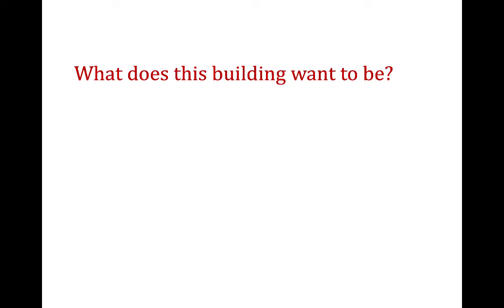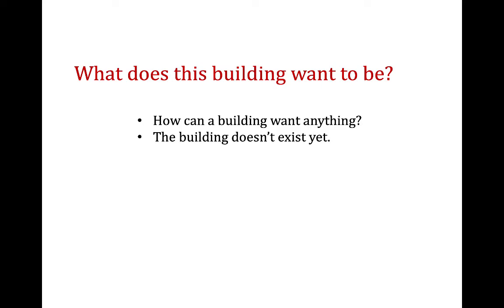Here's another one. Kahn famously began every project with, 'What does this building want to be?' I do a course on Kahn and Venturi; we do one week on Kahn's philosophy, and the whole course could be this one phrase. What's the first problem? How can a building want anything? It's an inanimate thing. What's the next problem? It doesn't exist yet. So right away, an inanimate thing that does not exist is wanting something — he's saying something here.